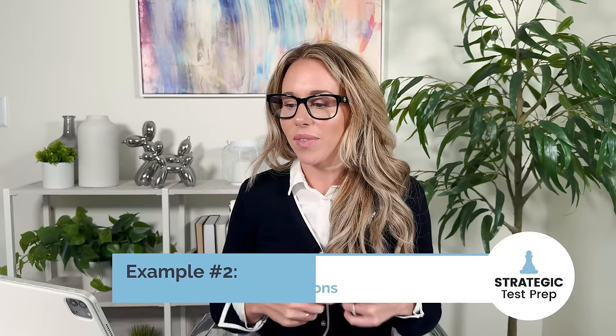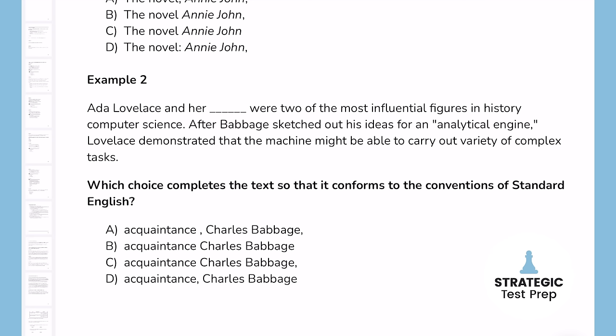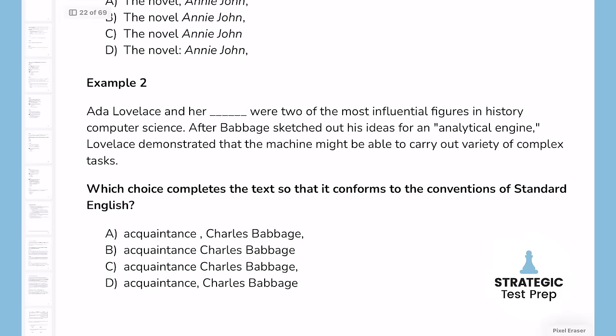The next example covers comma placement questions, which are huge on the digital SAT. A big strategy I like to use is to read the sentence and listen to where you pause — that's probably where commas need to go. You can also determine if something is essential or non-essential. For example: Ada Lovelace and her acquaintance Charles Babbage were two of the most influential figures. From reading it aloud without pausing, I'm already leaning towards picking B.